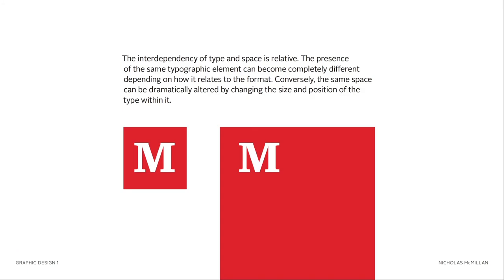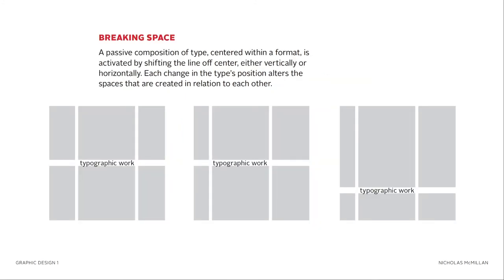Let's talk about typographic space. The interdependency of type and space is relative — the same typographic element can become completely different depending on how it relates to the format. Conversely, the same space can be dramatically altered by changing the size and position of the type within it. A passive composition of type centered within a format is activated by shifting the line off-center, either vertically or horizontally. By shifting the type over to the left and keeping it centered, it automatically activates more of the space on the right.